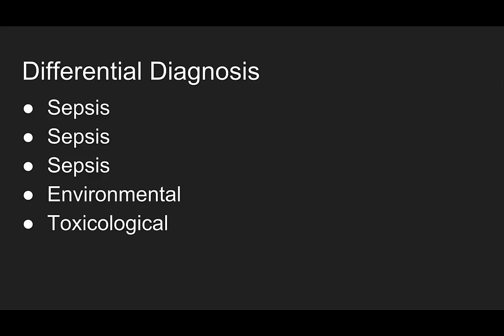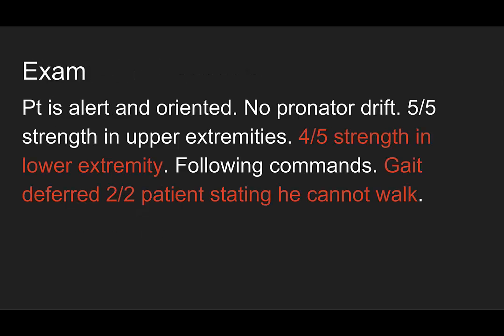Sepsis, right? He's got multiple SIRS criteria. We have time constraints placed on us in the care of sepsis patients — this has got to be in front of your mind. But don't forget your environmental causes and your toxicologic causes when you start to push temperatures of 40.5 degrees Celsius in an adult patient.